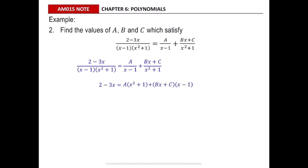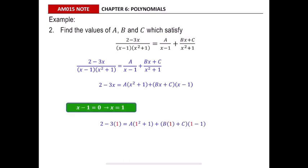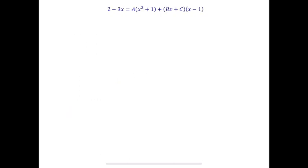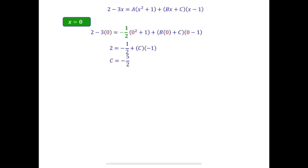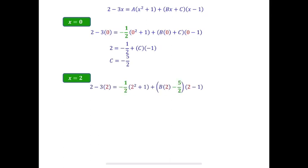To solve for A, B, and C we use the substitution method. Substituting x equals to 1 cancels the Bx plus C term, giving us the value of A. Then substituting x equals to 0 together with the value of A gives the value of C. Finally, substituting x equals to 2 together with the values of A and C gives the value of B. The values of A, B, and C are then determined.